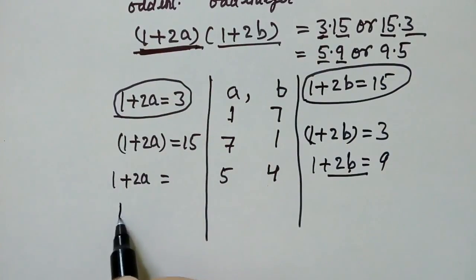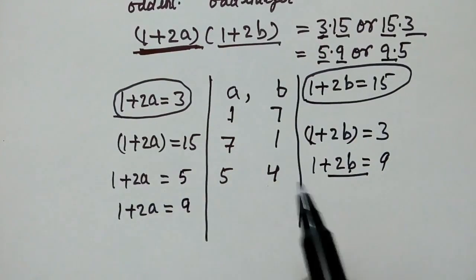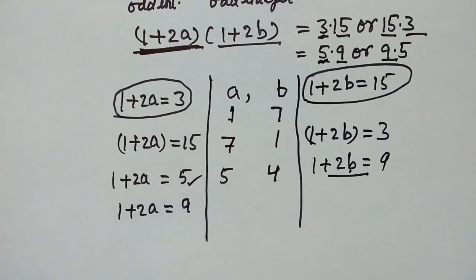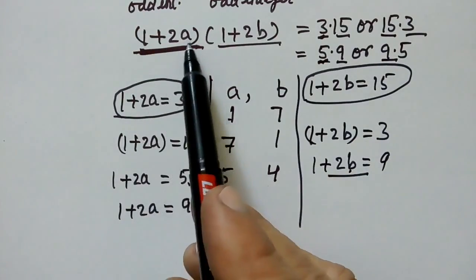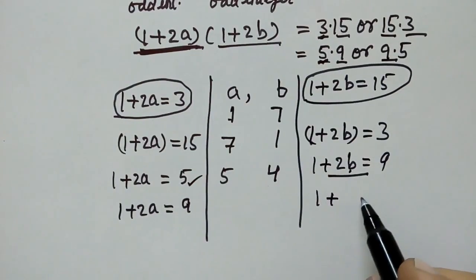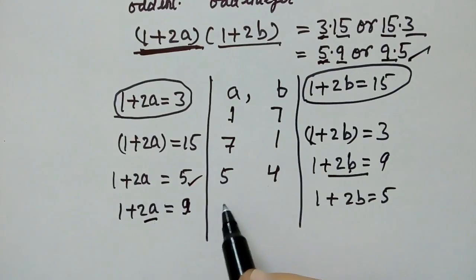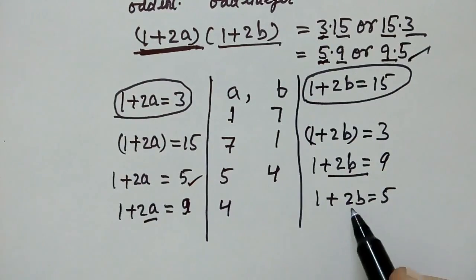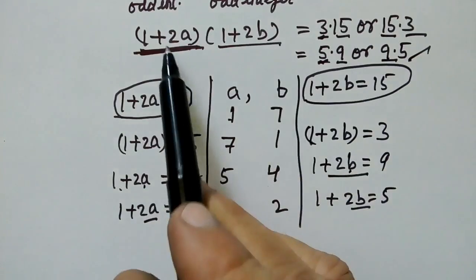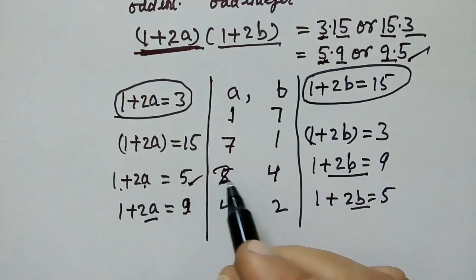Last and fourth step: 1 plus 2a equals 9 and 1 plus 2b equals 5. I am sorry, I have made some mistakes. For 1 plus 2a equals 5, the value of a will be 2. And from the last case, a will be equal to 4 and b will be equal to 2.